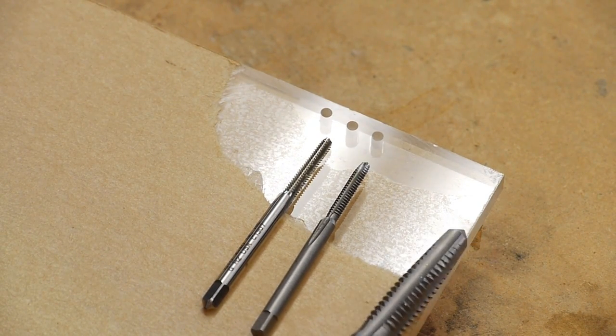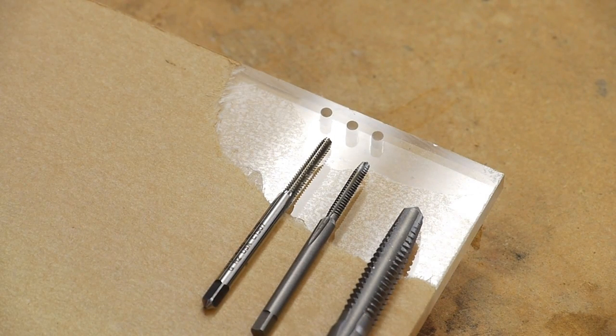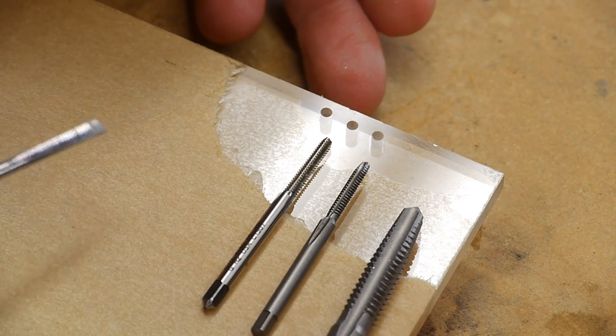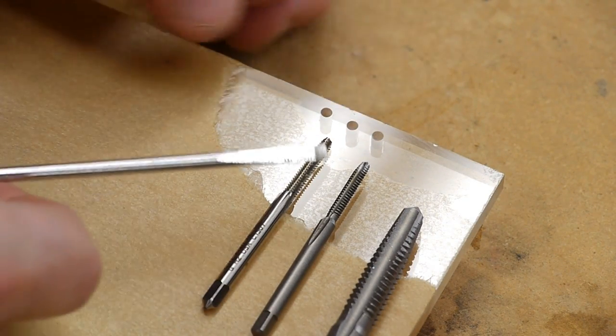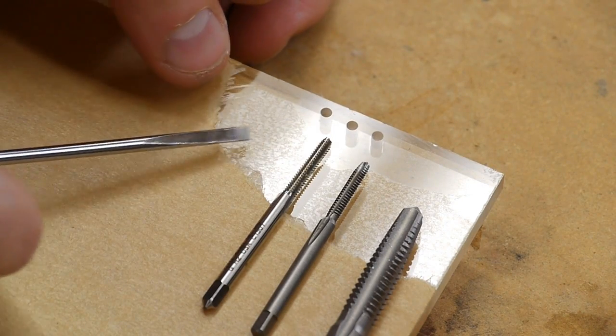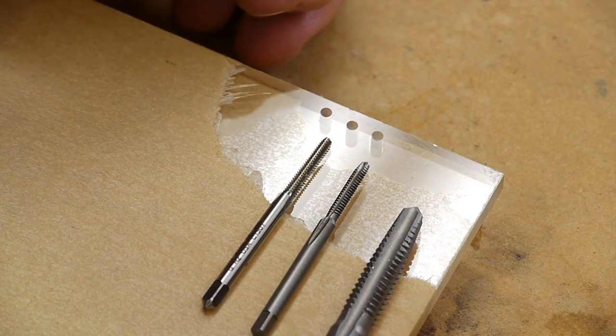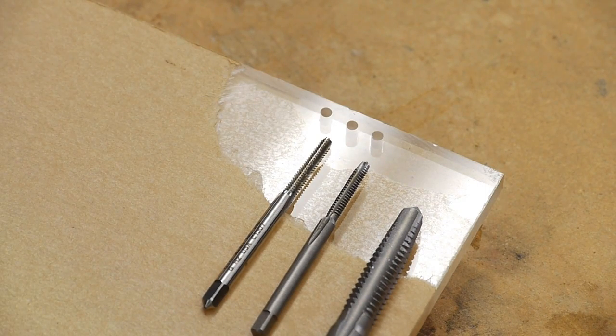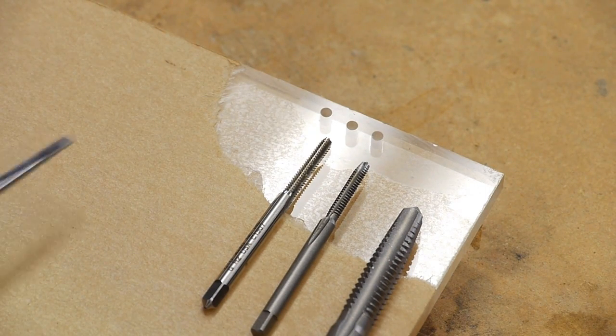The idea is that in difficult materials you would start with the taper tap because it's easier to get the tapping operation started straight. Then if you have a blind hole where you want to put threads all the way to the bottom of the hole and you can't go through the material, you can switch over to a bottoming tap which is much more difficult to get straight to begin with, but it cuts all the way to the end.